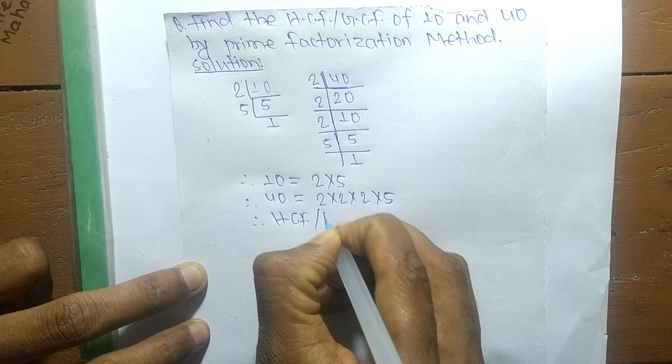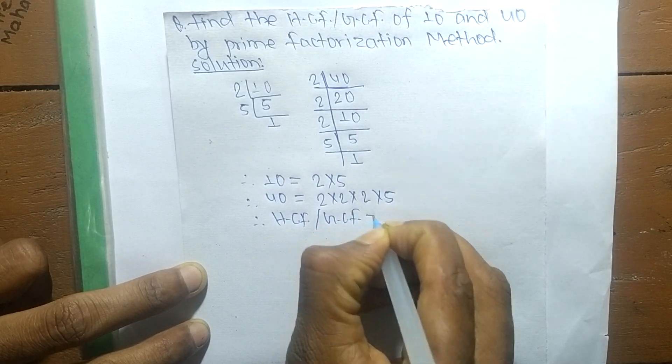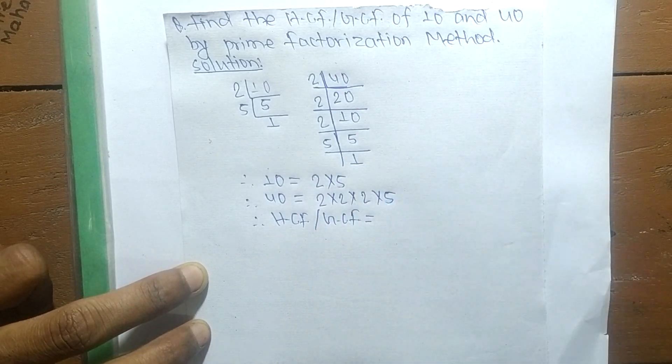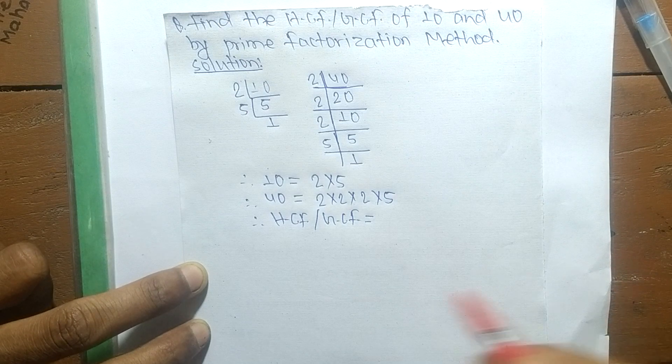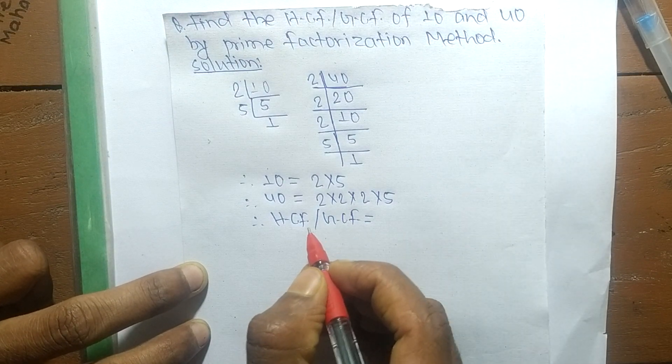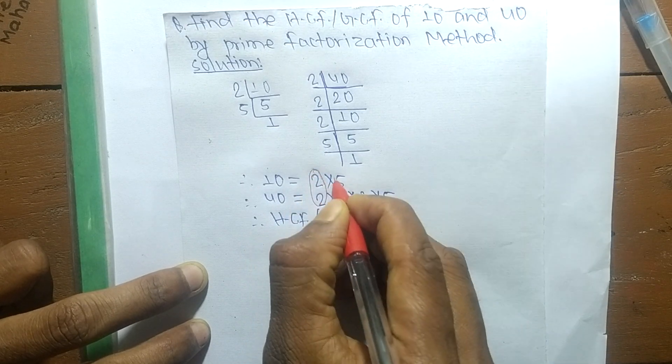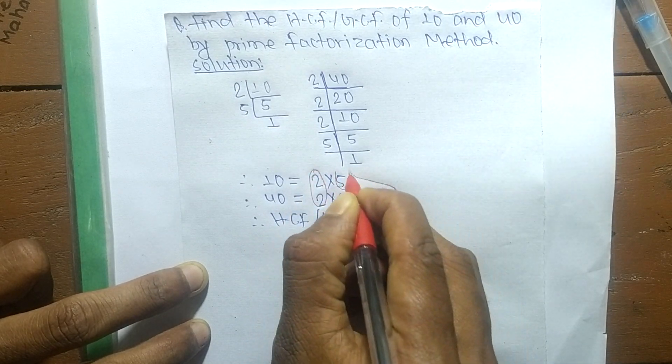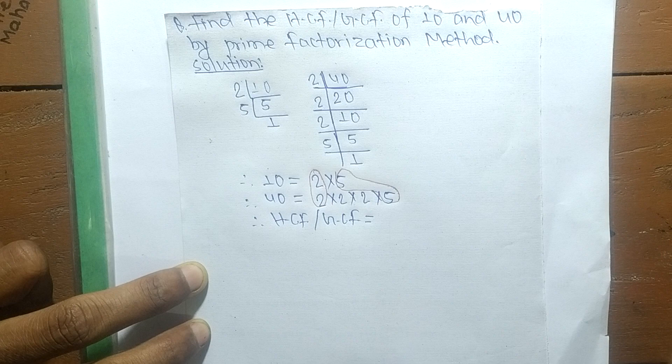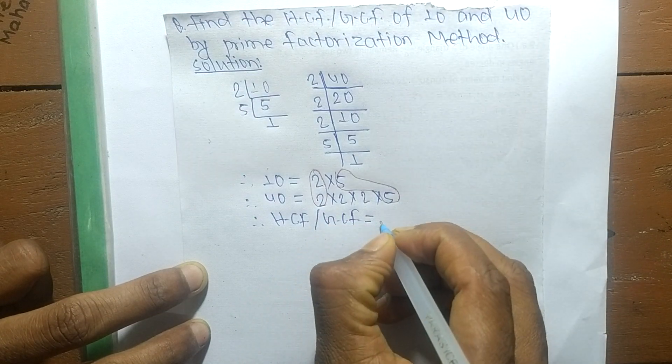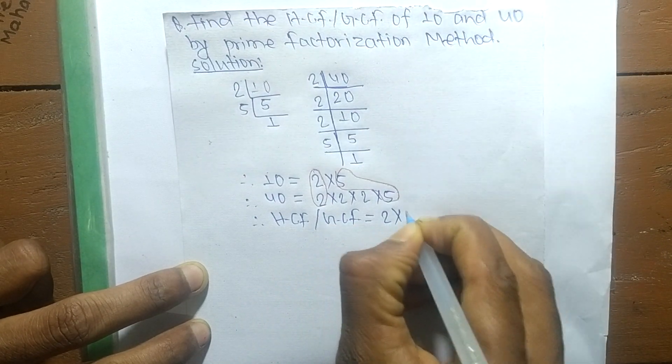In HCF or GCF, we take only the common factors in both numbers. The common factors here are 2 and 5. So HCF/GCF = 2 × 5.